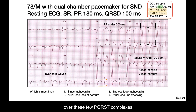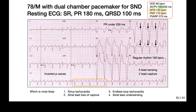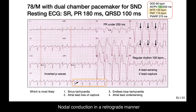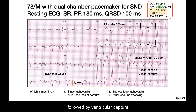Focusing on the rhythm strip over these few PQRST complexes: it starts with ventricular capture, followed by an inverted P wave suggesting nodal conduction in a retrograde manner. This is followed by a PR of under 200 milliseconds, corresponding to the programmed parameters, and then ventricular capture again.